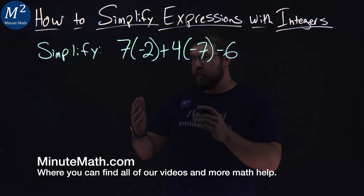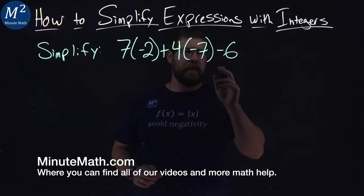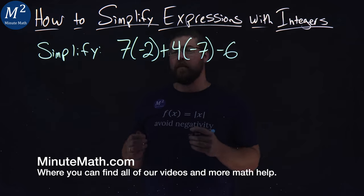We're given this problem here: 7 times negative 2, plus 4 times negative 7, minus 6. And we have to simplify.